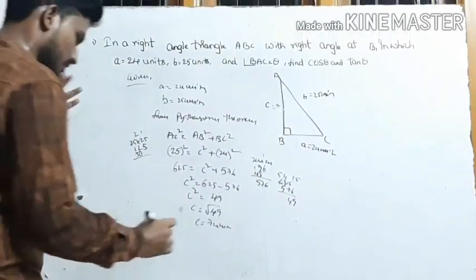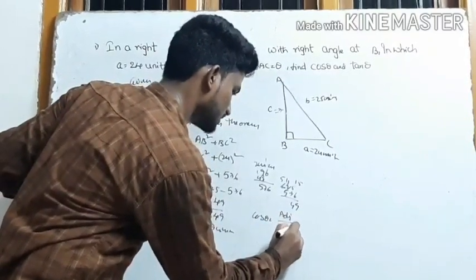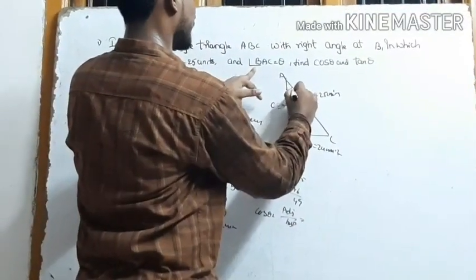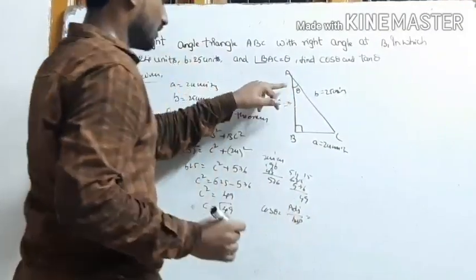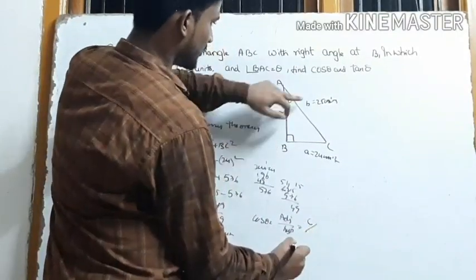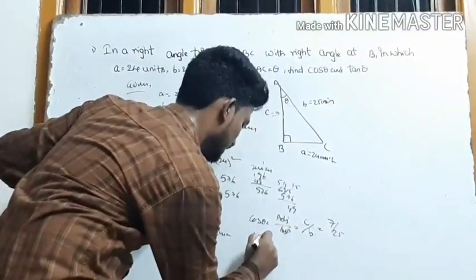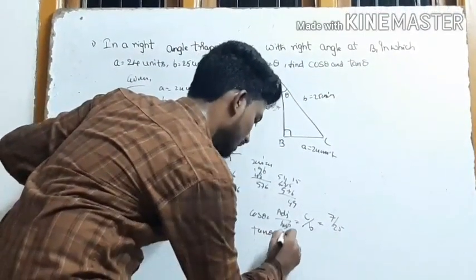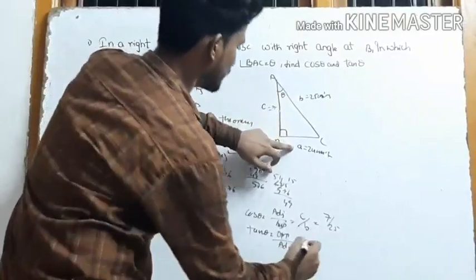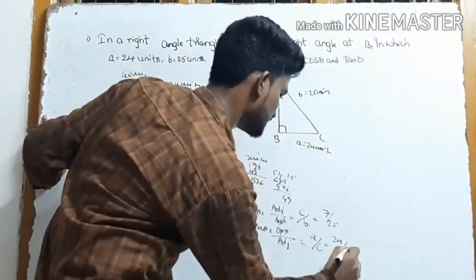From angle theta at A: cos theta equals adjacent by hypotenuse. Adjacent here is BC = 7, hypotenuse is AC = 25. So cos theta = 7/25. Tan theta equals opposite by adjacent. Opposite AB = 24, adjacent BC = 7. So tan theta = 24/7.